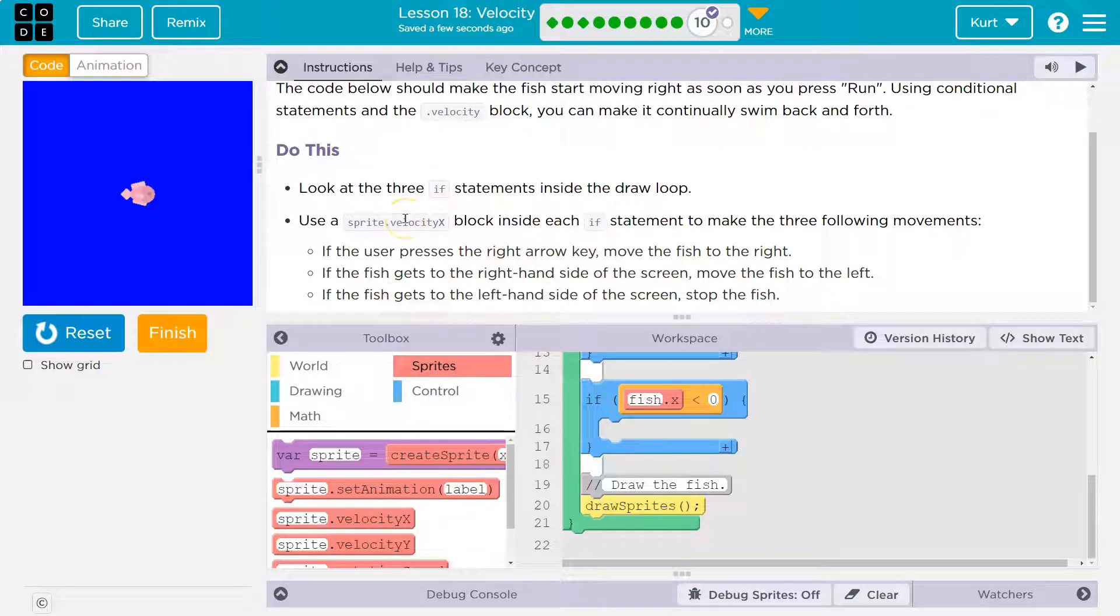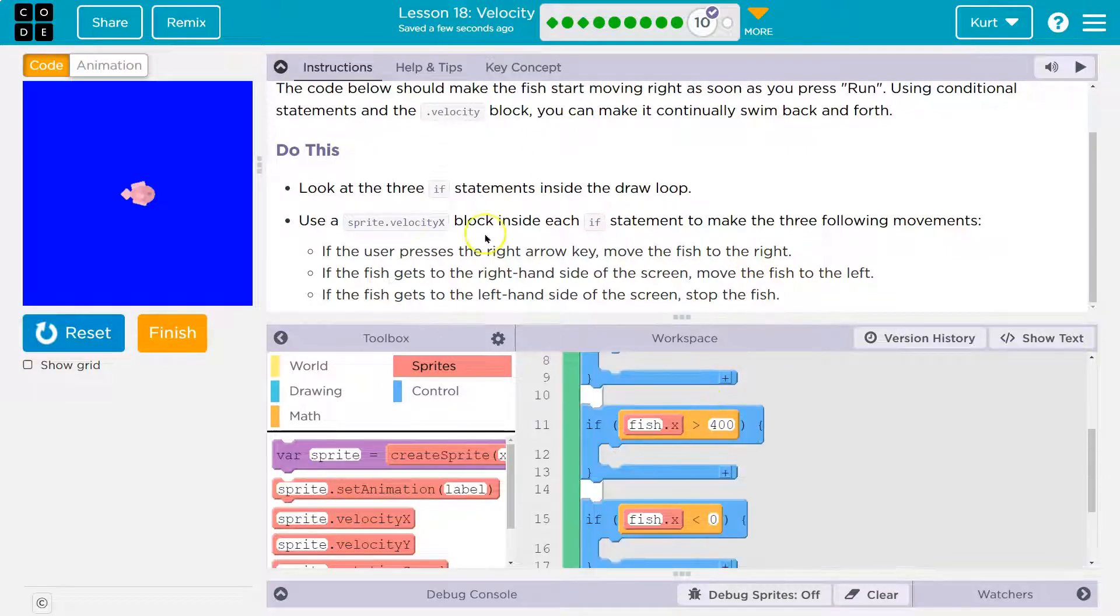Use the sprite.velocityX block inside each of the if statements to make the three following movements. Got it. So if the user presses the right arrow key, move the fish to the right. Okay, so it told us already fish.velocityX.